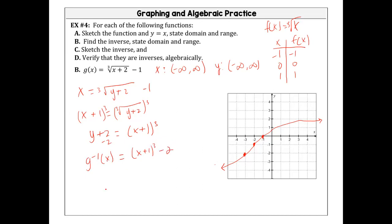Again, the domain and range of the original become the range and domain of the inverse. Conveniently, since both go from negative infinity to positive infinity, they stay the same — negative infinity to positive infinity for both domain and range.